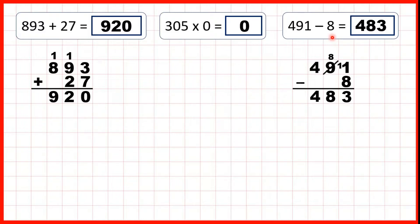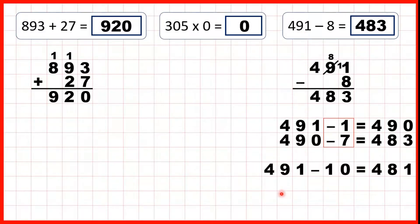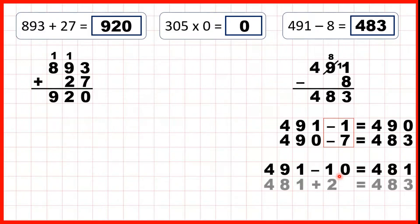But we could have used mental methods here. Starting with 491, we could take away 1 to get to 490, and then from 490, take away 7 to get to our answer, because if we subtract 1 and then subtract 7, we've subtracted 8 altogether. Or, we could have used a different mental method. From 491, we could have subtracted 10 to get to 481, but that's subtracting 10, and we only want to subtract 8. So subtracting 10 means we've subtracted 2 too many. So we need to adjust by adding 2 to get 483. So if we take away 10 and then add 2, that's the same as taking away 8.